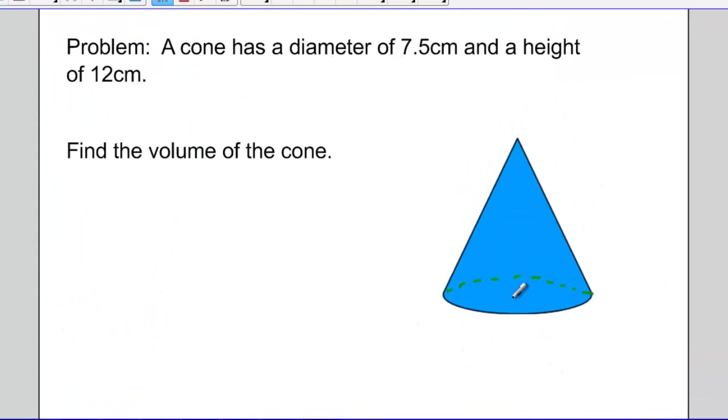So let's try this problem. A cone has a diameter from one side to the other of 7.5 centimeters, and it has a height of 12 centimeters. Let's find the volume of the cone.